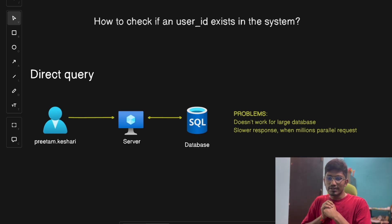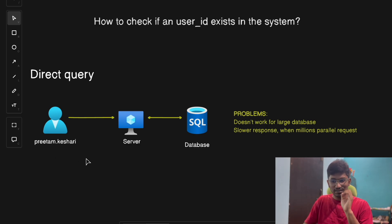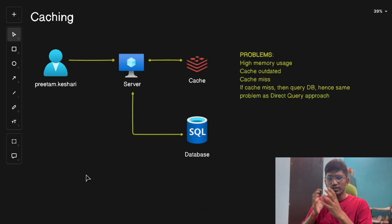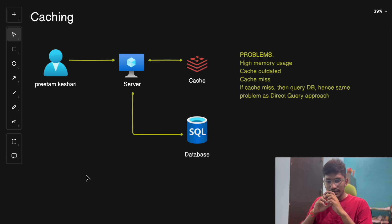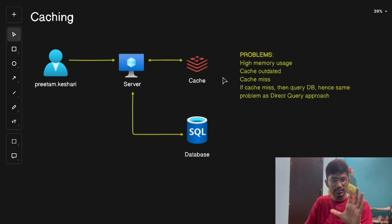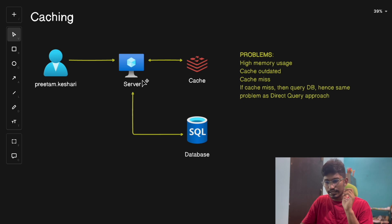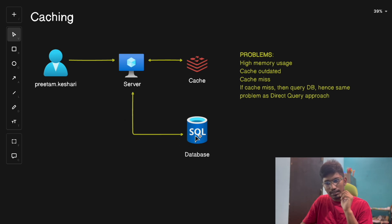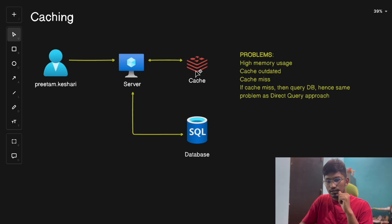Instead of going to the database every time, we can use the mechanism of caching. A cache is like a shortcut — it stores the results of the most recent queries in memory. If someone asks 'does user XYZ exist?', the cache already knows the answer and can deliver it super fast. For example, to check if 'pritam.kesari' exists, the server first checks the cache. If not found there, it queries the database and updates the cache so future requests for the same username are served from cache.